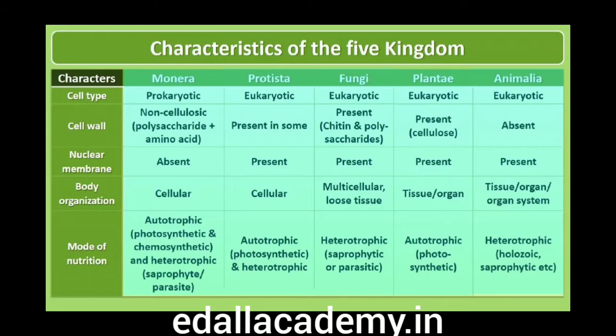Nuclear membrane: in Monera it is absent; in Protista, Fungi, Plantae and Animalia it is present. Body organization: Monera and Protista are cellular; Fungi are multicellular loose tissue; Plantae has tissue and organ; Animalia are organized into tissue, organ, and organ system. Mode of nutrition: Monera are autotrophic (chemosynthetic and photosynthetic) and heterotrophic (saprophytic, parasitic); Protista are autotrophic (photosynthetic) and heterotrophic; Fungi are heterotrophic saprophytic/parasitic; Plantae are autotrophic photosynthetic; Animalia are heterotrophic holozoic/saprophytic.